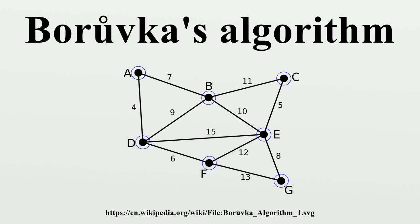Borůvka's algorithm can be shown to take O(log V) iterations of the outer loop until it terminates, and therefore to run in time O(E log V), where E is the number of edges and V is the number of vertices in G.